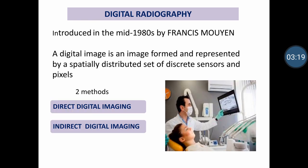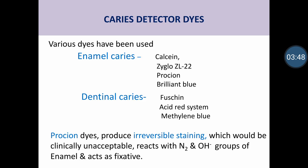Another radiographic method is digital radiography, which is filmless with no wet processing. There is direct digital imaging or indirect digital imaging, and various techniques are available for it. RVG is one form of digital radiography. So we have intraoral periapical radiographs, bite-wing radiographs, panoramic radiographs, and digital radiographs — these are the various radiographic methods used in diagnosing caries.